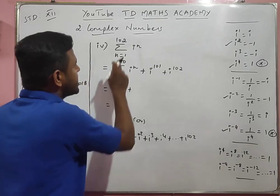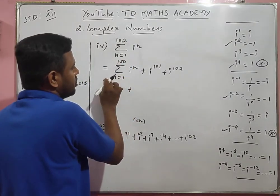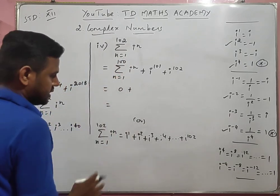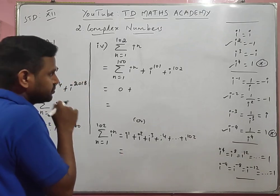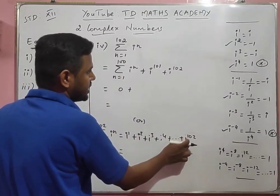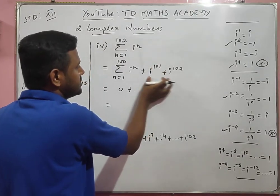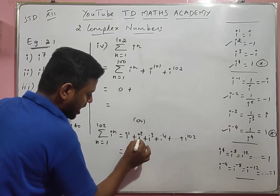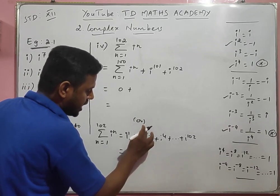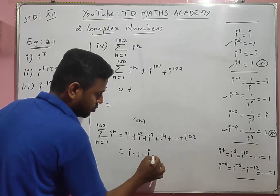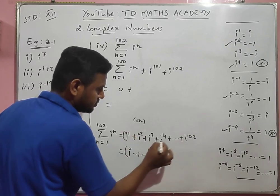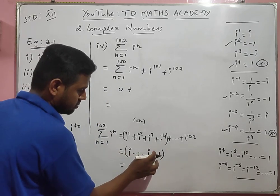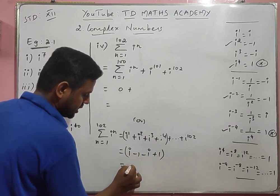The values cycle: i power 1 = i, i squared = minus 1, i cubed = minus i, i power 4 = 1. In each bracket of 4 terms: i + (minus 1) + (minus i) + 1 = 0. Each group of 4 consecutive powers of i sums to zero.